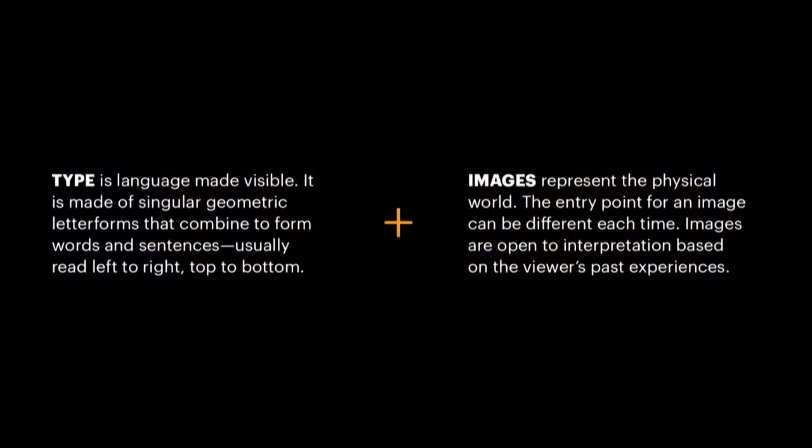I start my lecture talking about the differences between type and image. As we've heard a lot about this morning, typography is language made visible — it's learned. In our class, we're talking about singular geometric letter forms that combine to create words, then sentences, usually read left to right, at least in English. Images represent the physical world. I often put up pictures of my kids or a dog — you come with your own experiences and biases. So we talk about that when you're using type and image together.